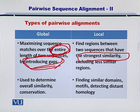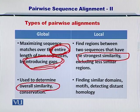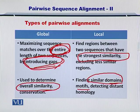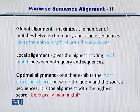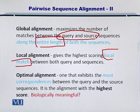In global pairwise sequence alignment, you are trying to compare the full sequences against each other, so you determine the overall similarity. While in local pairwise sequence alignment, you only find similar domains or portions such as motifs between two sequences. Local alignment helps you identify portions within the sequences that are very similar, while global pairwise sequence alignment allows you to compare two sequences in their entirety. The global alignment maximizes the number of matches between the query and the source along the entire length of the sequences, while local alignment gives a score to the local match between the query and source sequence.